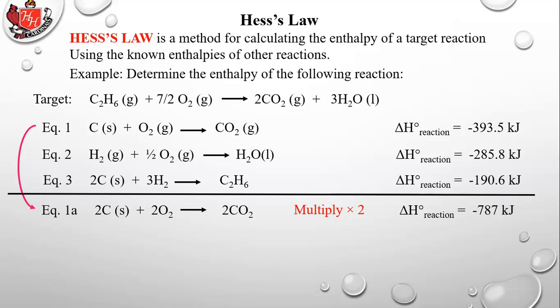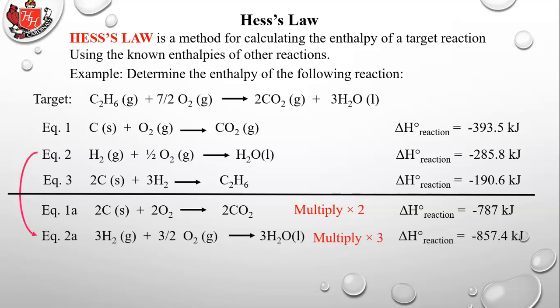Next, H2O appears only in equation 2. The target has 3H2O on the right, but equation 2 only has one mole. So we multiply equation 2 by three to get equation 2a: 3H2 + 1.5 O2 → 3H2O, with enthalpy of three times negative 285.8, which equals negative 857.4 kilojoules.